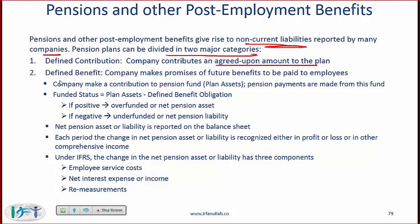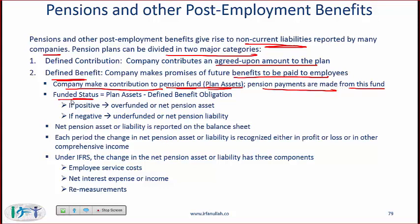The more complex one is a defined benefit plan, where the company makes promises of future benefits to be paid to employees. The company contributes to a pension fund — the plan asset — and pension payments are made from this fund. At any point in time, the funded status equals the current value of the plan assets minus the defined benefit obligation, which is the present value of the future obligation.